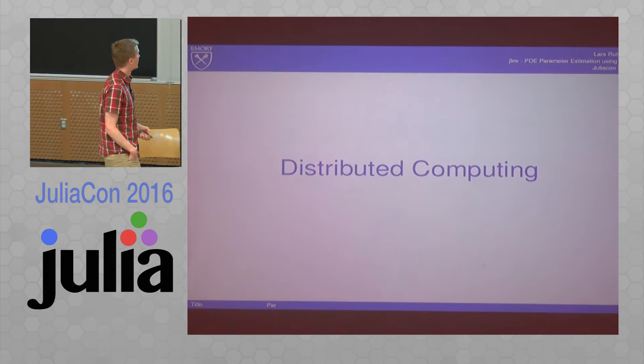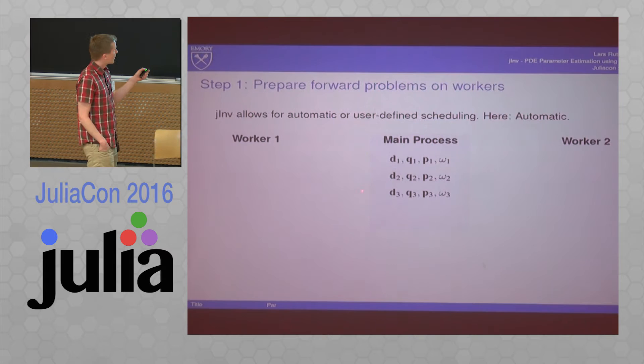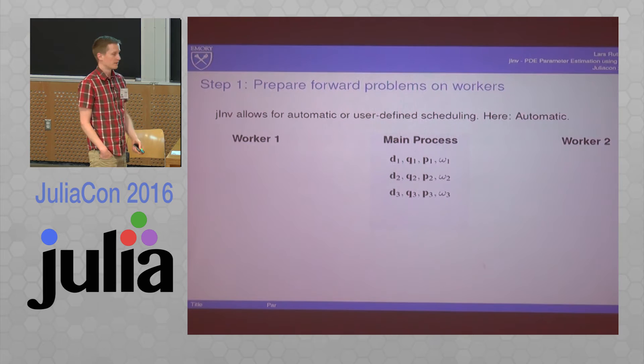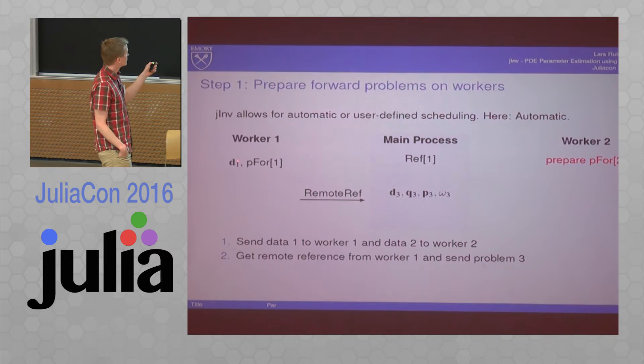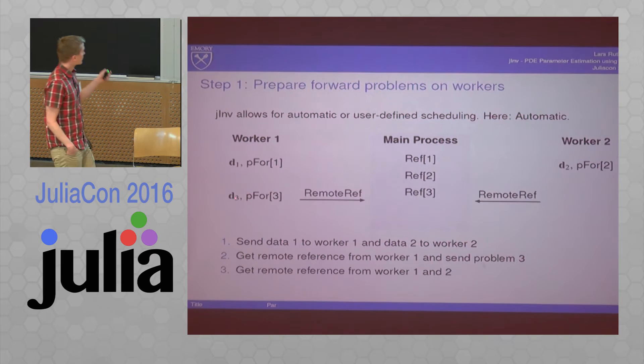So how do we do that? Say we have two workers and three problems. The main process here, that's the guy we talk to all the time in Julia. It has all of the data initially, but then it sends all the data and all the problem descriptions to the worker. They are busy preparing those problems and returning remote references when they are done. In this case, worker one is done earlier than worker two, so he gets the third problem.